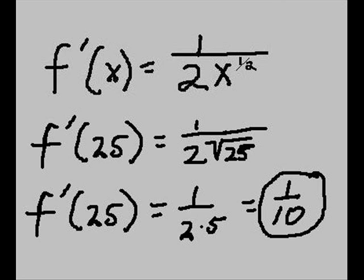x to the one-half power is really the radical sign. So f prime of 25 equals 1 over 2 times 25 to the one-half power, or the square root of 25. The square root of 25 is 5. 1 over 2 times 5, that equals 1 over 10. So the derivative is one-tenth.